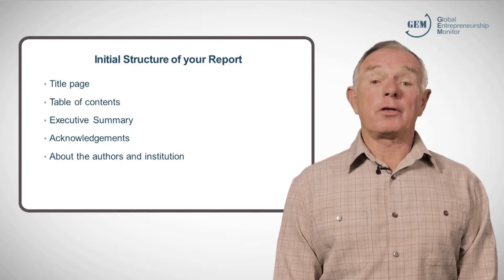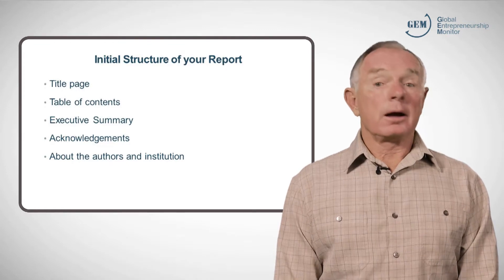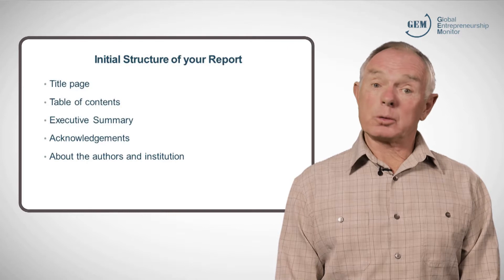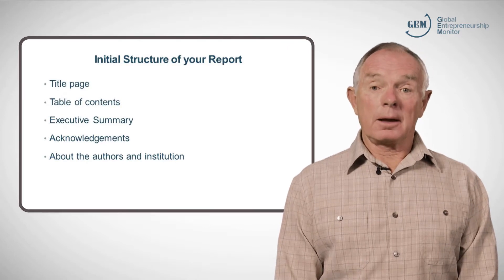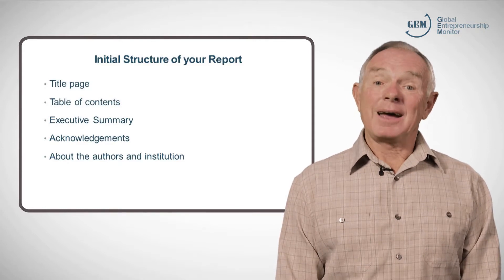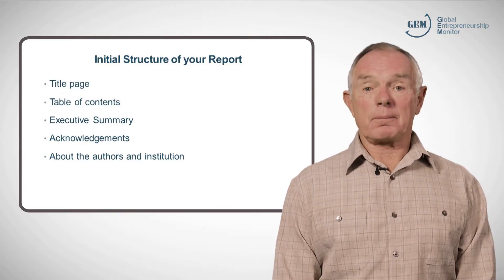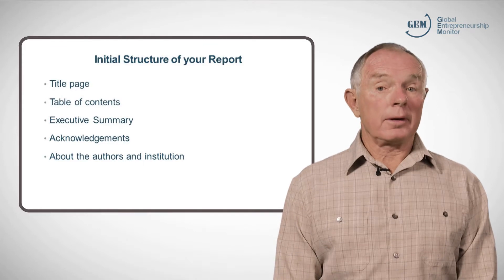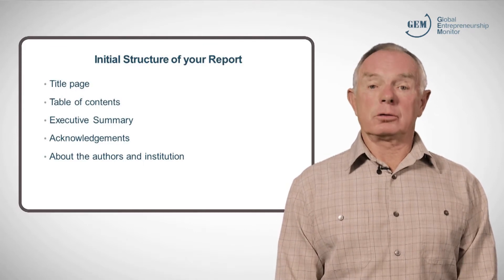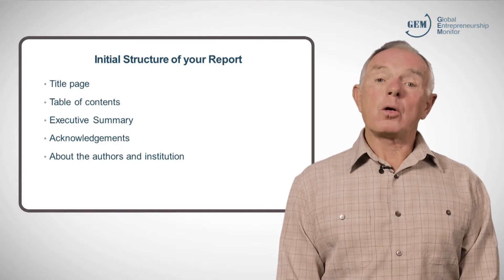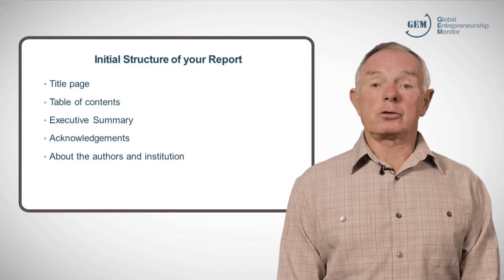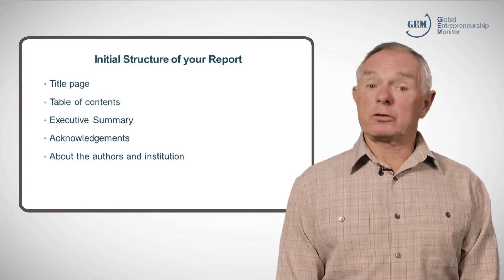This involves the title page, the page for the table of contents — which at this stage would not be completed — the executive summary, which again can only be completed at the end of the report, acknowledgements, and a section about the authors and your institution. You may also want to include a foreword from your sponsor or your institution, but this is your decision.